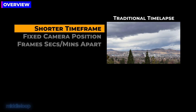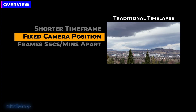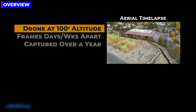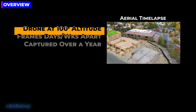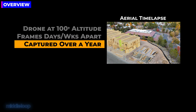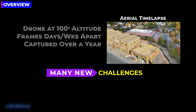This is not your traditional time-lapse. Typically, time-lapse is shot over a much shorter period of time from a camera that's mounted in a fixed position, with frames shot seconds or minutes apart. In our time-lapse, images were captured from a drone at an altitude of about 100 feet off the ground, with each frame captured days or even weeks apart. From start to finish, we captured images over a period of more than a year, which introduces a number of challenges you wouldn't normally find in traditional time-lapse.